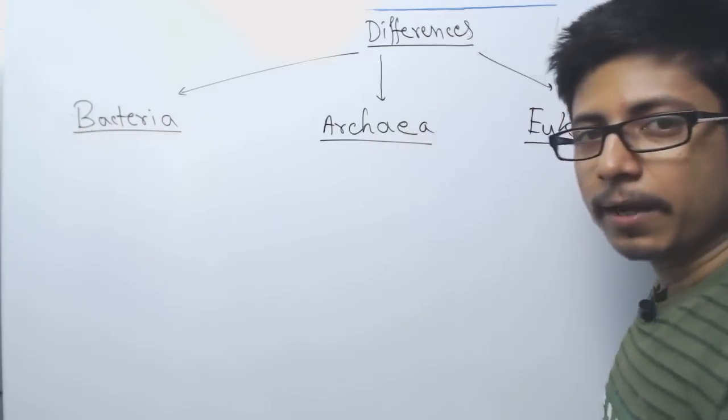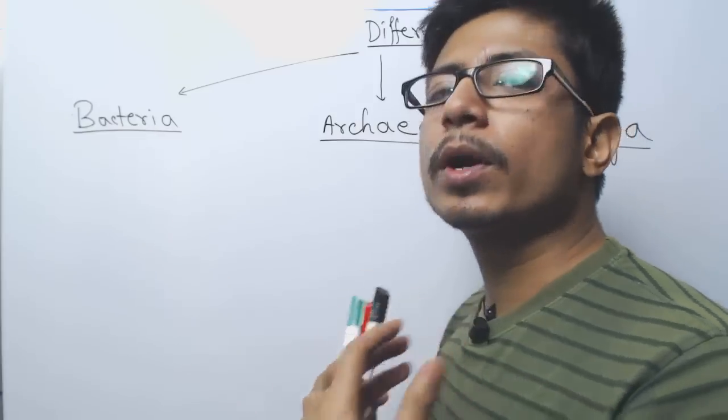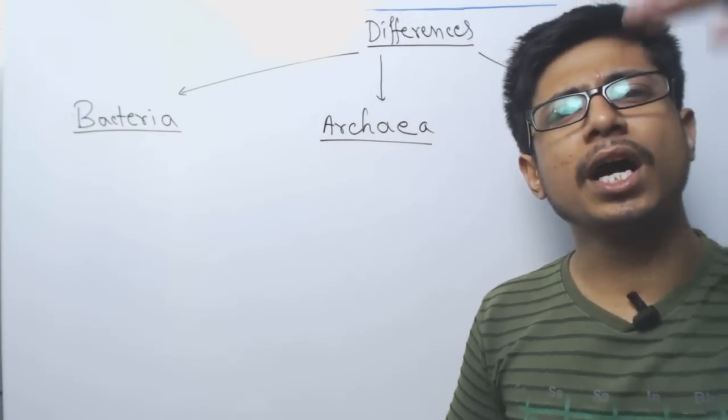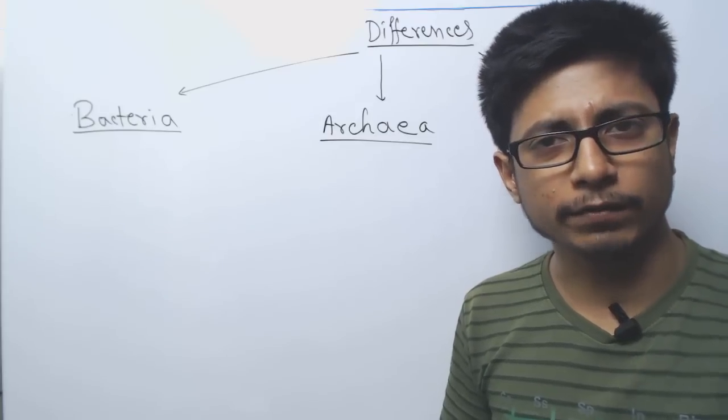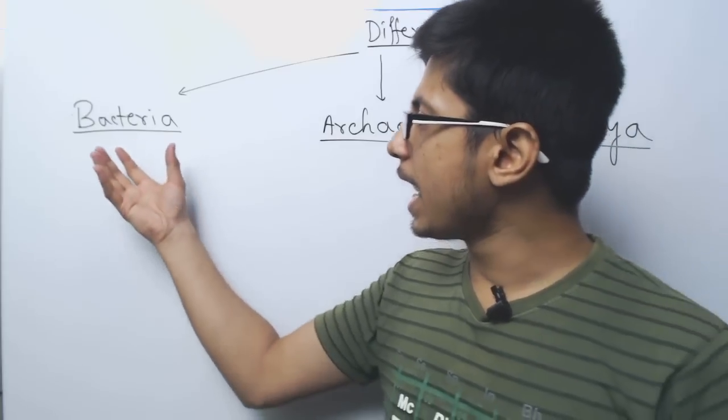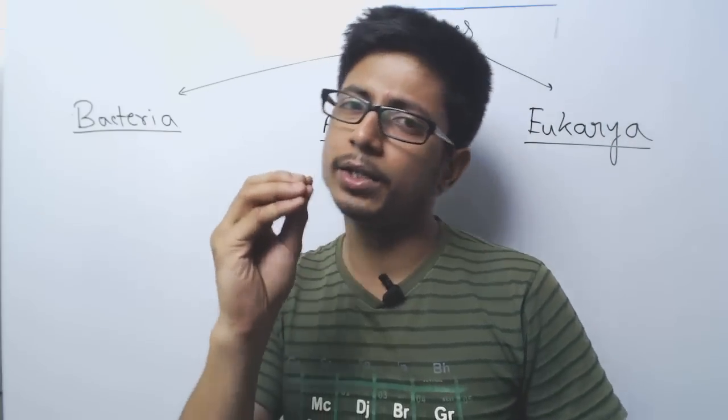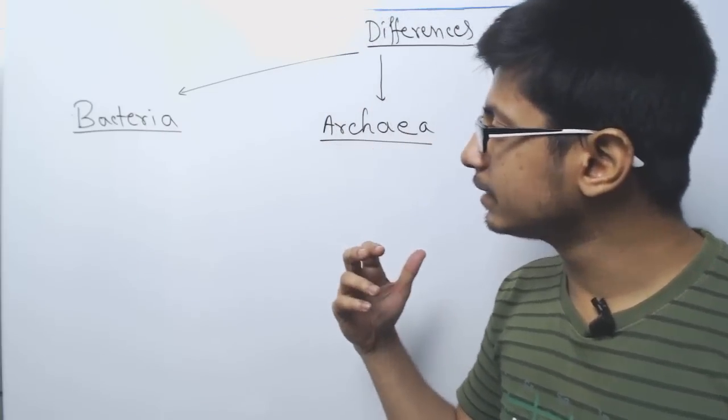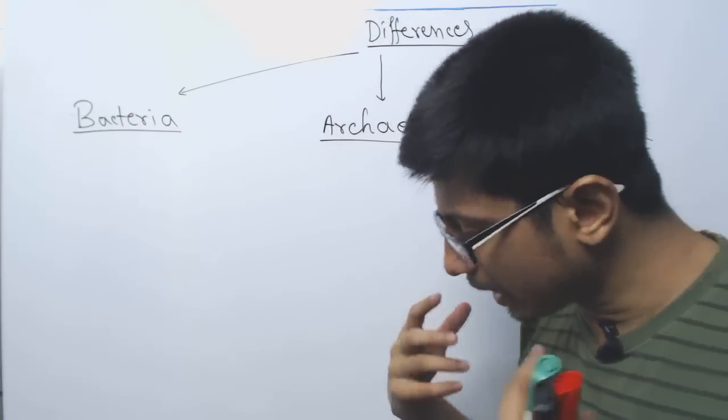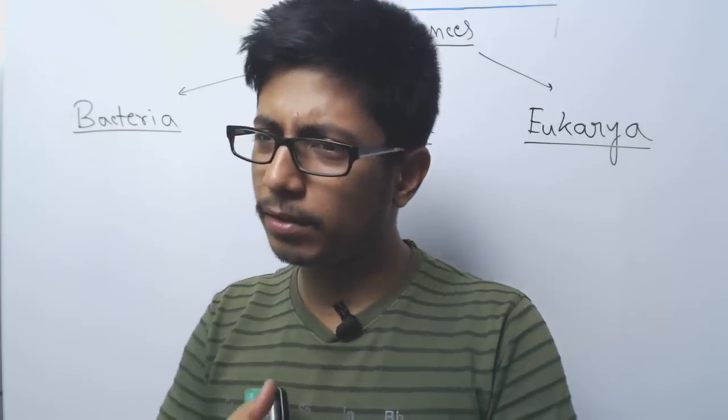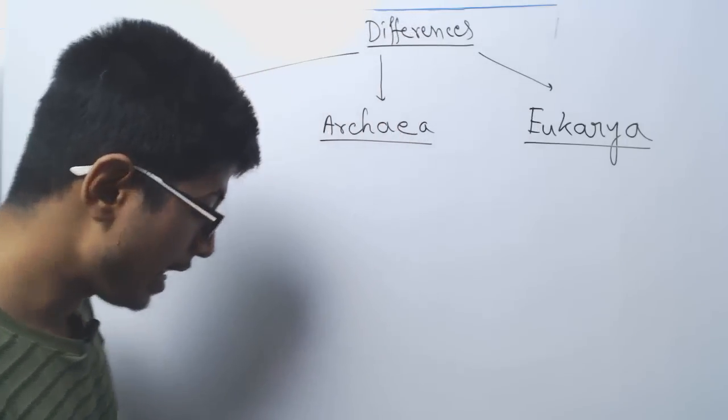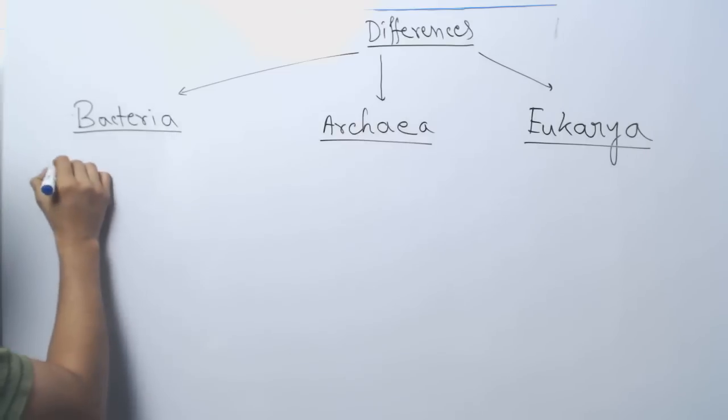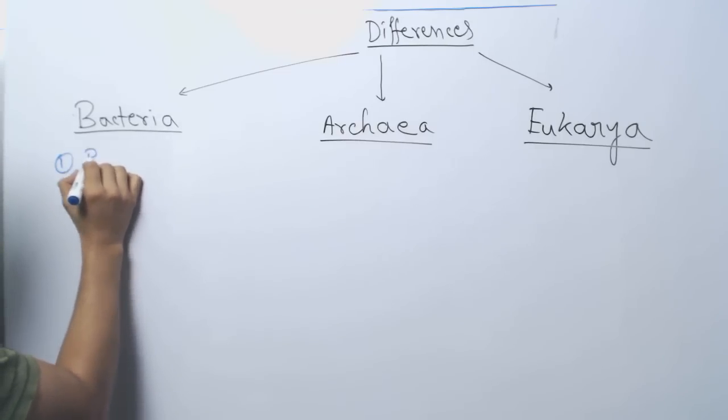First thing about bacteria. Bacteria are prokaryotic organisms that came much earlier at the time of evolution. They are very small, tiny organisms. We cannot see them with our naked eye. If you look at the cell of bacteria, all of them are single cellular organisms. Let me write those things - the features of prokaryotes.